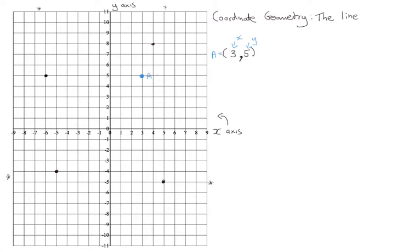Now say I want to plot a coordinate like (-2, 6). Again, the first number is the x-axis and the second number relates to the y-axis. So the first number is minus 2 — we go along the x-axis to minus 2 — and then we go up to 6. So it's above minus 2 and level with 6. Let's call this B.